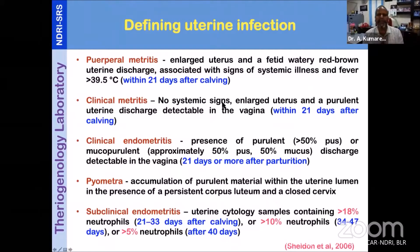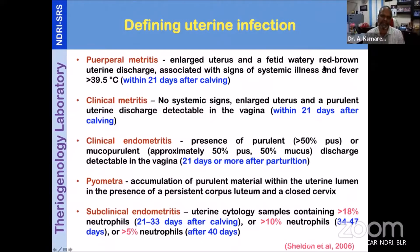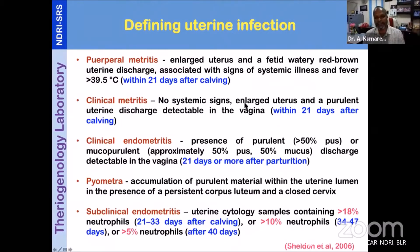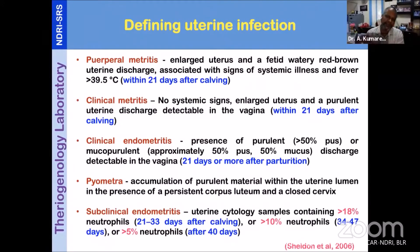Puerperal metritis means that within 10 to 14 days after calving, the animal has infection with an enlarged uterus and fetid, watery, reddish-brown sero-sanguineous uterine discharge, always associated with systemic illness. This condition is called puerperal metritis. The second is clinical metritis — here there are no systemic signs, but one can observe purulent discharge accumulating in the vagina or sometimes at the vulva. These two conditions occur within 21 days after calving.